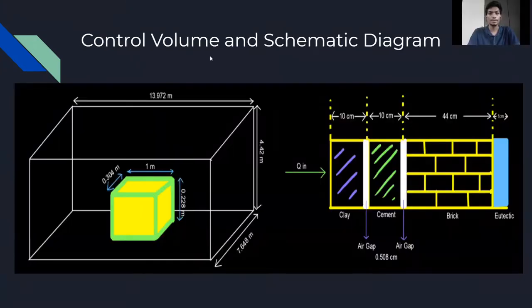This is the control volume and schematic diagram. This diagram shows the total system with a cold storage room and a single crate for fruit storage. This diagram shows that the wall has layers of clay, cement, brick, and eutectic along with air gaps to account for contact resistance between these materials.